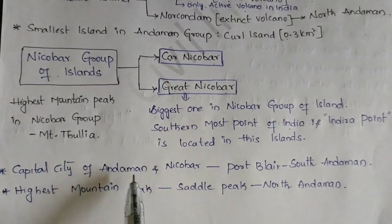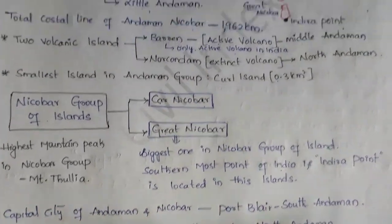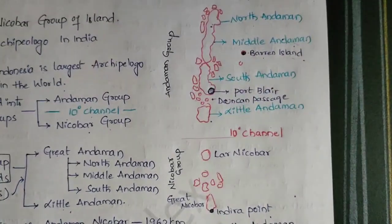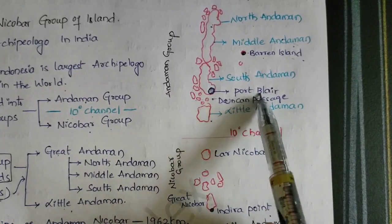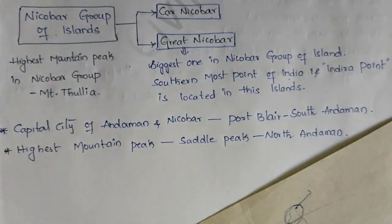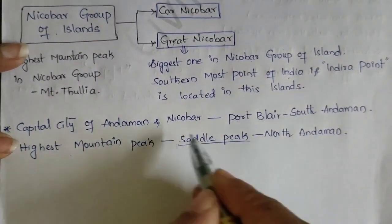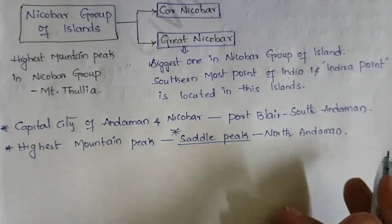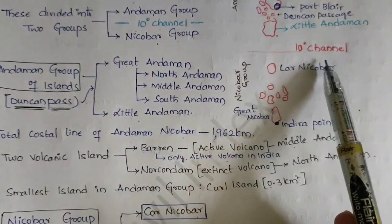The capital city of Andaman and Nicobar is Port Blair, which is in South Andaman. The highest mountain peak is Saddle Peak, which is in North Andaman. Every point we discussed about Andaman and Nicobar is very important — the 10-degree channel, the capital, the volcanoes, and Indira Point.